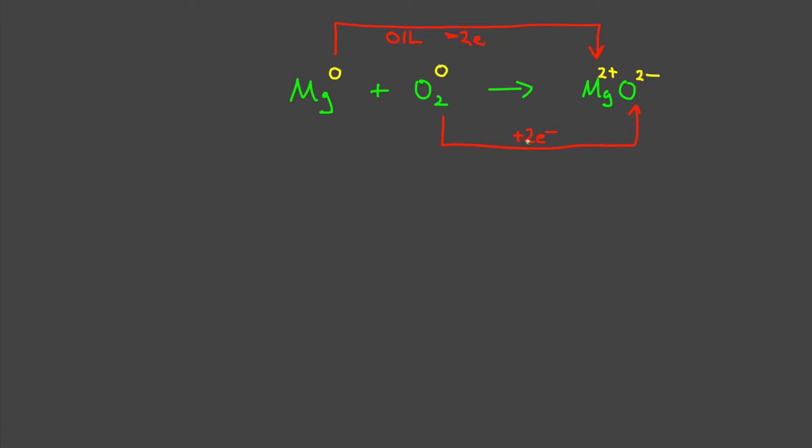Oxidation is loss, and that minus sign indicates its loss. Similarly, oxygen gained two electrons, so it was reduced. Reduction is gain. There you have it. There's the species identified.